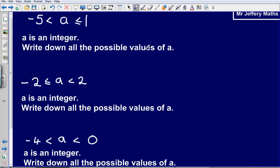So, a is an integer. Write down all of the possible values of a. So again, a is greater than minus 5, but it is equal to or less than 1. So, what possible answers could we have? So it has to be whole numbers.